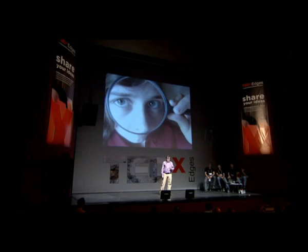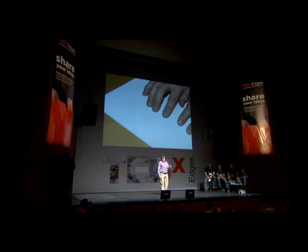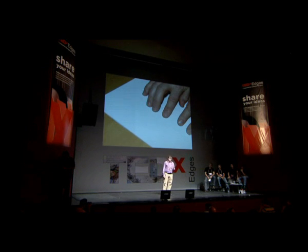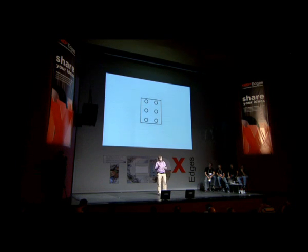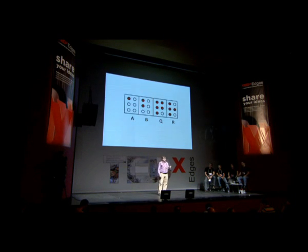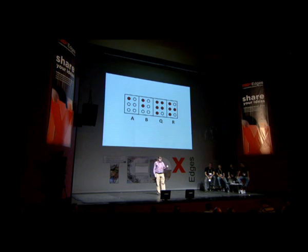We set out to help these people to interact better, and to do so, we looked at what we know about them. Being blind people, we know they can read Braille. And this is a Braille cell — different combinations of raised dots in this matrix represent different characters.